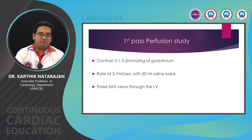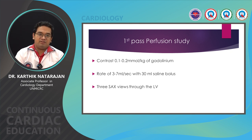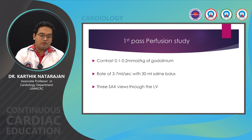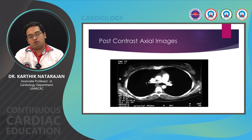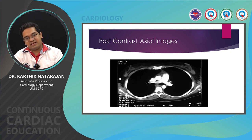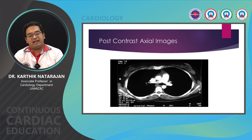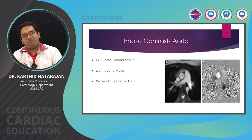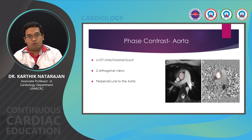For first-pass perfusion, the contrast is generally 0.1 to 0.2 millimoles per kg of gadolinium at a rate of 3 to 7 ml per second with a 30 ml saline bolus, taking three short-axis views through the LV. After giving gadolinium, you wait 10 to 15 minutes before obtaining LGE images. During that time, you take post-contrast axial images to look at extra-cardiac structures such as the ascending aorta, descending aorta, MPA, RPA, and LPA, as well as any lymphadenopathy or extra-thoracic structures.